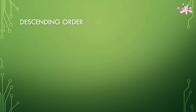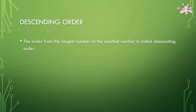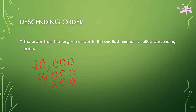Descending order is the order from the largest number to the smallest number. For example, 20,000, 2,000, 200, and 22 — these numbers are written in descending order.